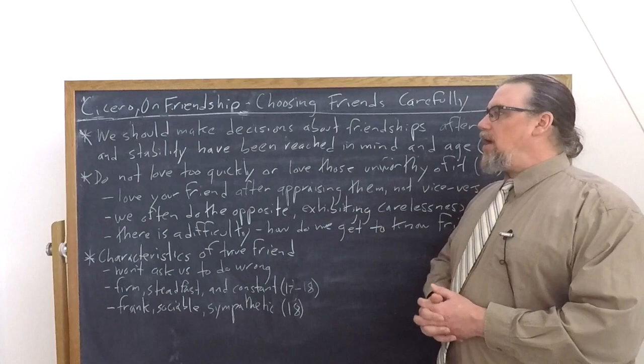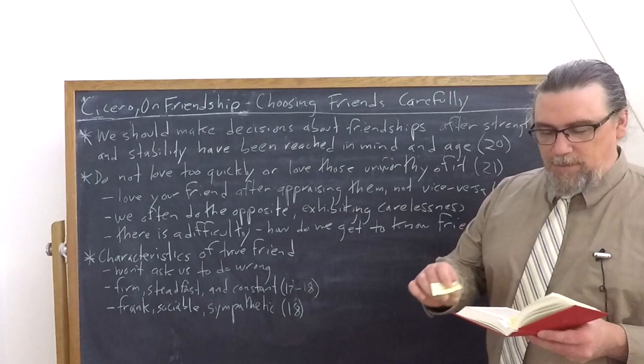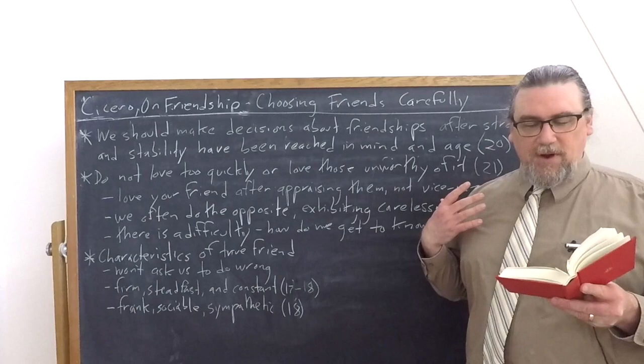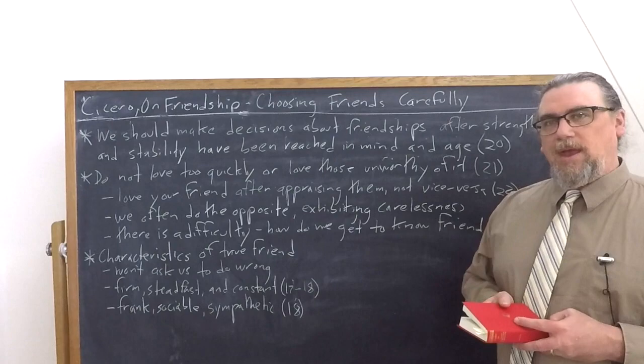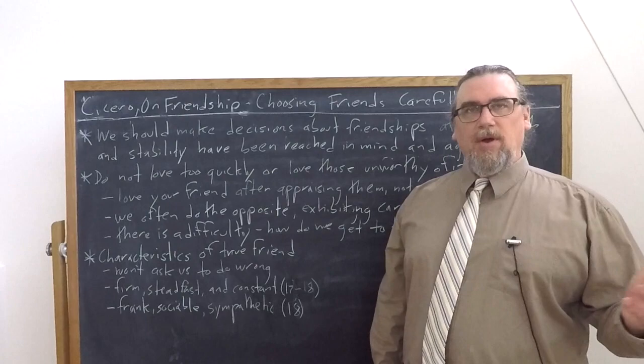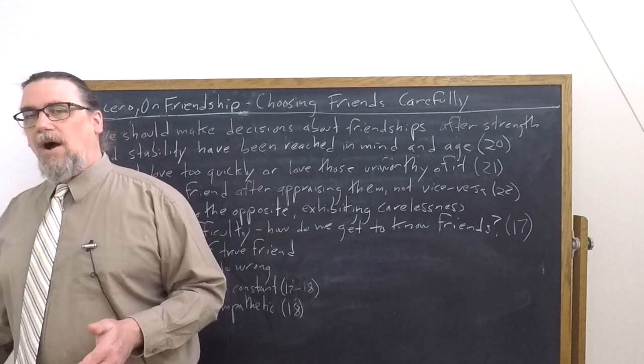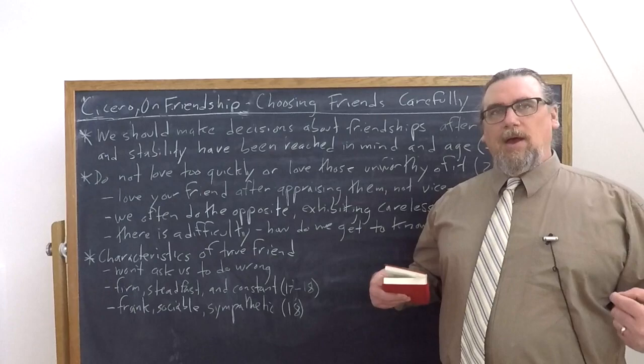Well, he goes on and he says that what our procedure ought to be, he says there's only one security and one provision against the ills of having picked up the wrong sort of friendship, that is neither to enlist your love too quickly in order to fix it on unworthy men. And they are worthy of friendship who have within their own souls the reason for their being loved. So right off the bat, that tells us some things. You shouldn't be loving people because they invite you to the best parties. You shouldn't be loving people solely because they're physically attractive. You shouldn't be loving people because they have a ton of money or a fast car.